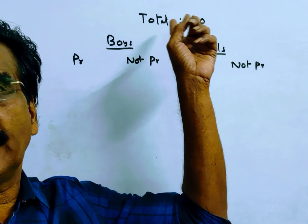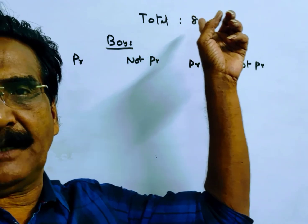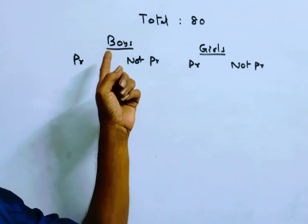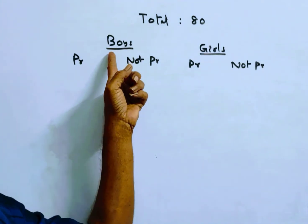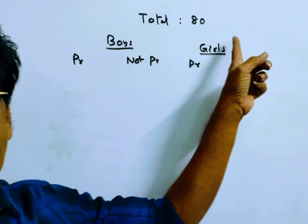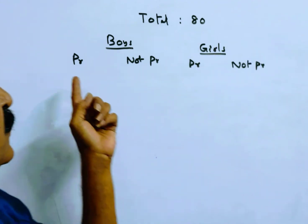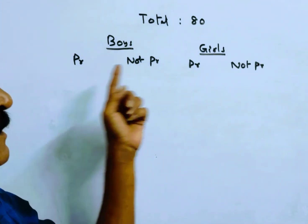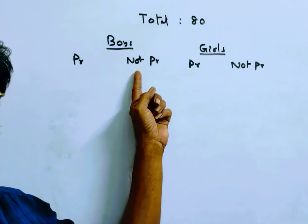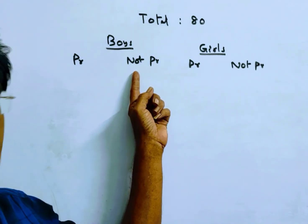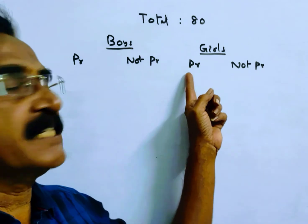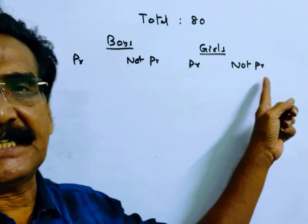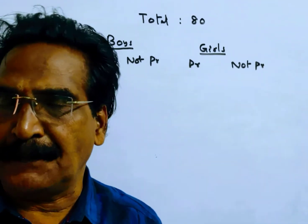There are total 80 number of students. This is boys, this is girls, this is boys present, this is boys not present, this is girls present, and this is girls not present.